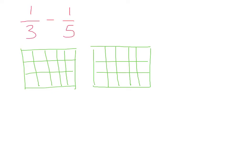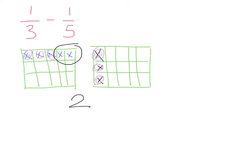My first building has one-third occupied, so I X out one-third of the building. My second building has one-fifth occupied. Keep in mind that the second diagram is your measuring stick — this is what you use to take away from the first. When I subtract, I match each marked room from the second diagram with one in the first, and I'm left with two. So my fraction is two over the total number of rooms, which is 15. My final answer is two over 15.